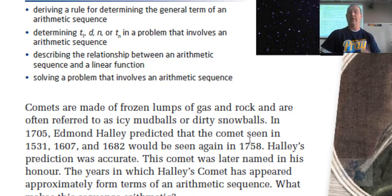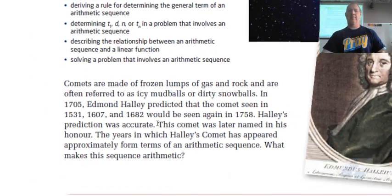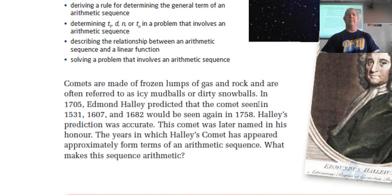If you notice these numbers—1531, 1607, 1682—he figured that if this is the same comet, and it's been coming around the Earth as recorded in these years, there may be a pattern emerging. He predicted that the comet would be seen again in 1758. He died in 1742, so he didn't get to see this. But after he died, people knew about his prediction. When it came true, they named it Halley's Comet.